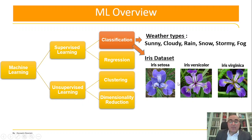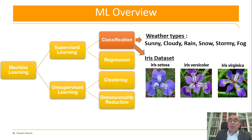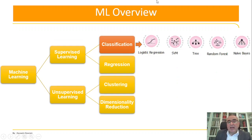We will train our dataset on the Setosa flower, Versicolor flower, and Virginica flowers. What will be the accuracy? How are we going to do the training, see the misclassified items, and show the confusion matrix? This is what we're going to talk about in classification.